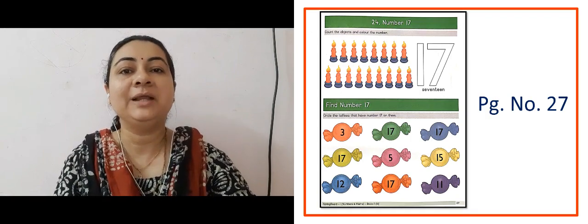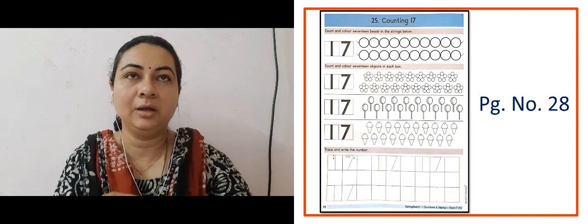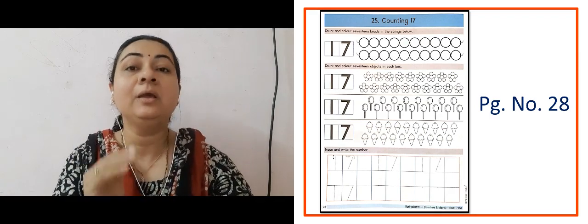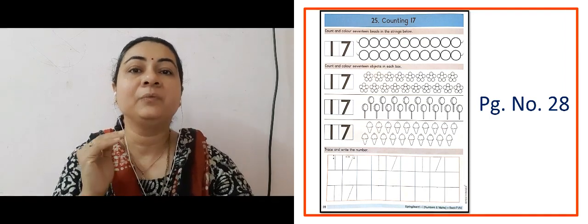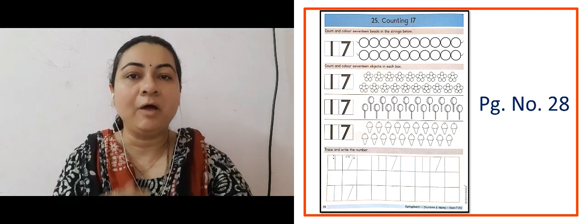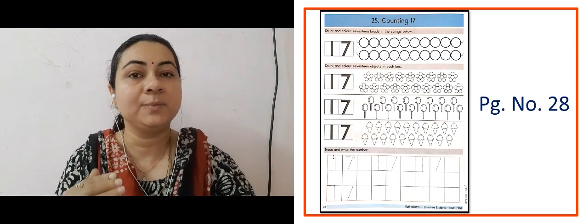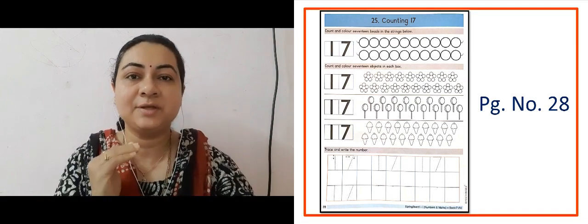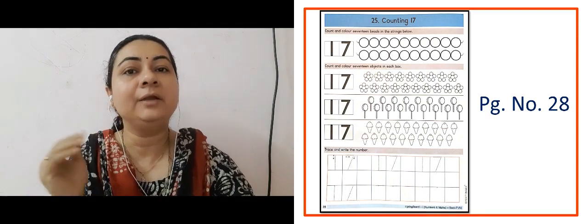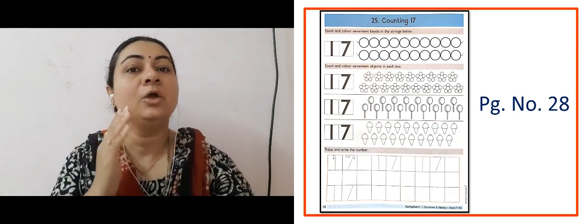The next slide is showing us page number 28, Counting 17. Here some birds are given and the number of toffees are also shown. After that we traced and wrote number 17. You will practice this on your own.